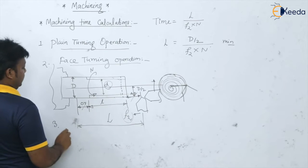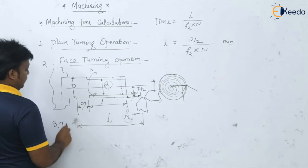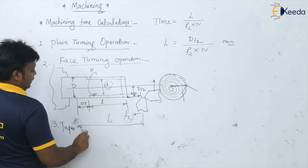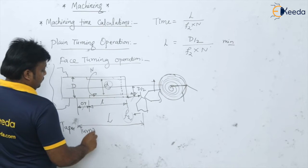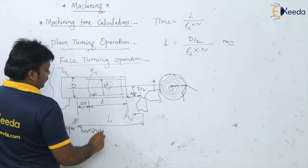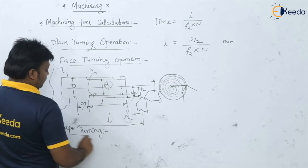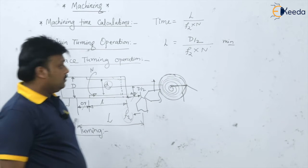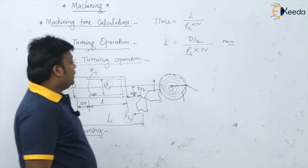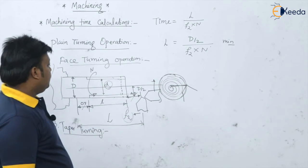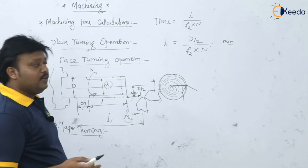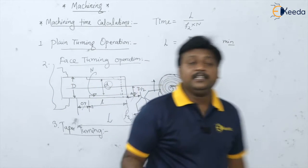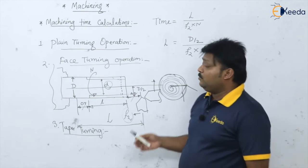The third case on the lathe machine is the taper turning operation. There are various methods: the compound rest method, the offset or set-over method, and the form tool method for producing a taper on the given workpiece on the lathe.